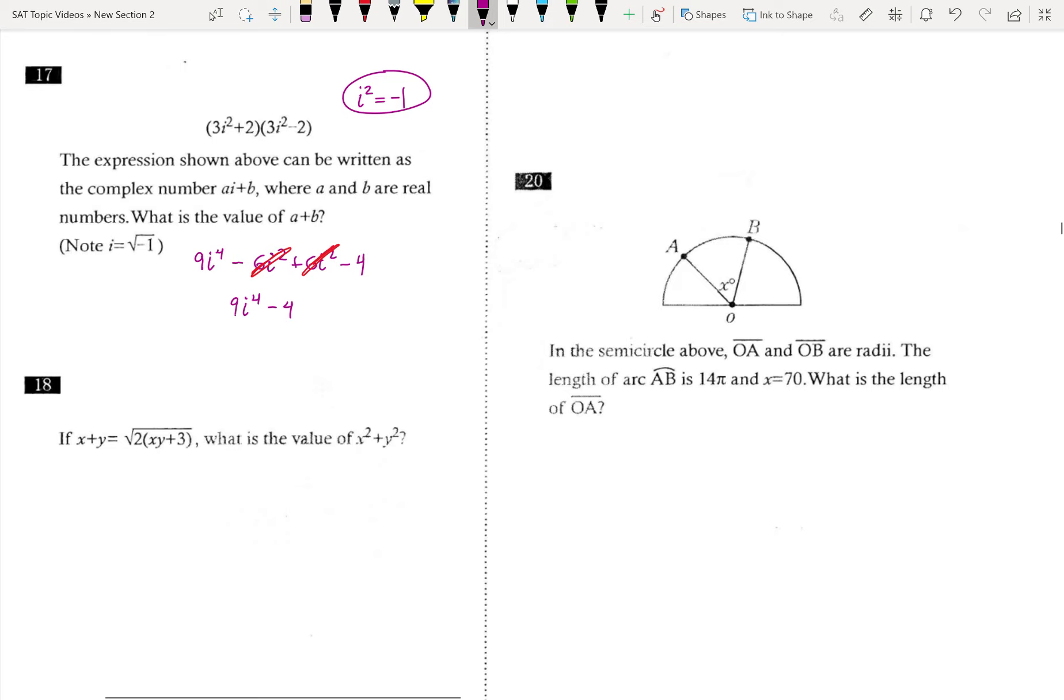And then we can say that i squared times i squared would equal i to the fourth. So in other words, negative one times negative one would equal i to the fourth, and negative one times negative one is just positive one. So I can plug in positive one for the i to the fourth, and it just turns out to be 9 minus 4, which equals 5.